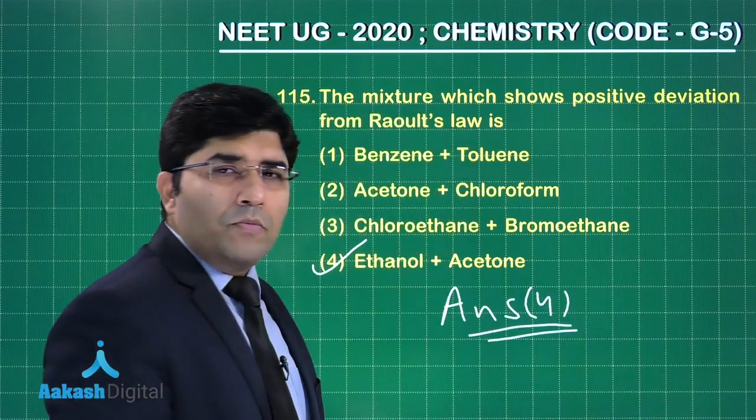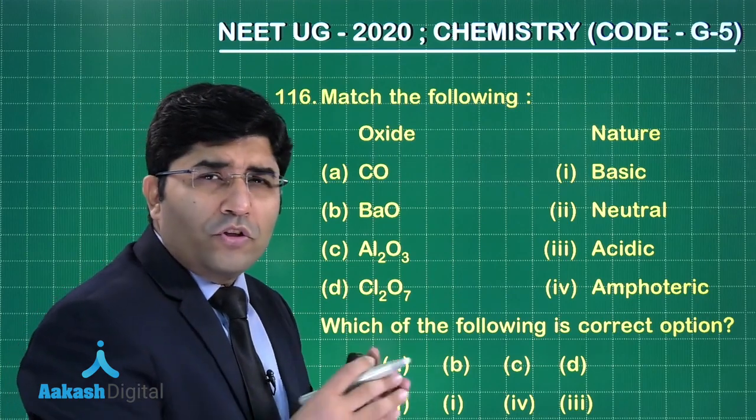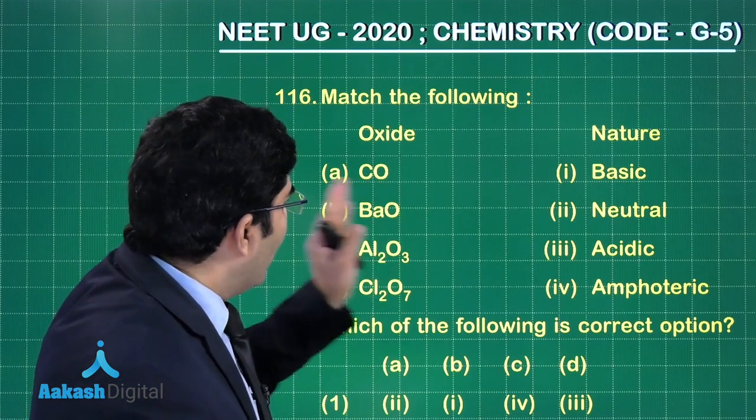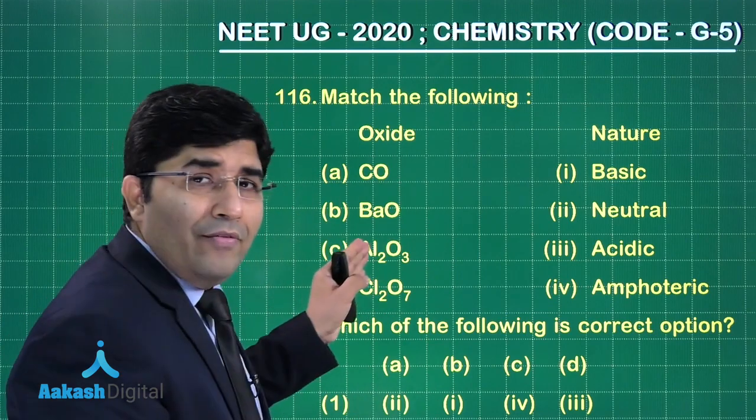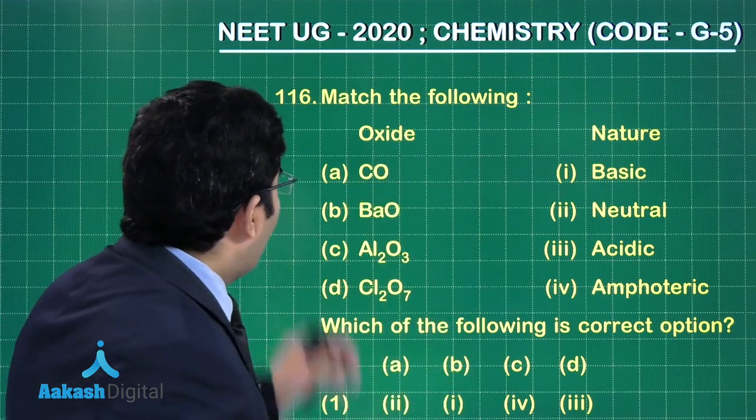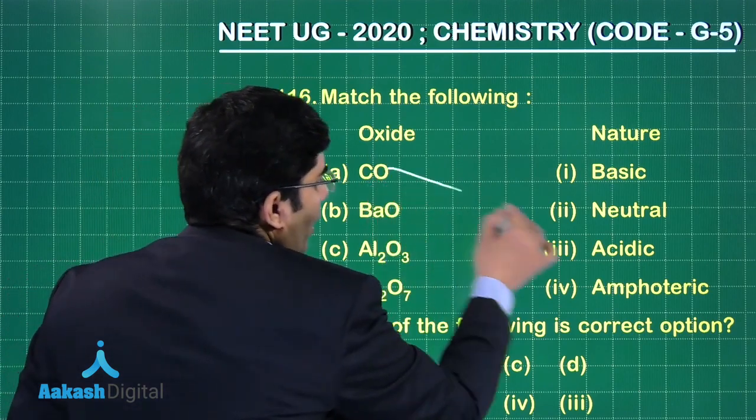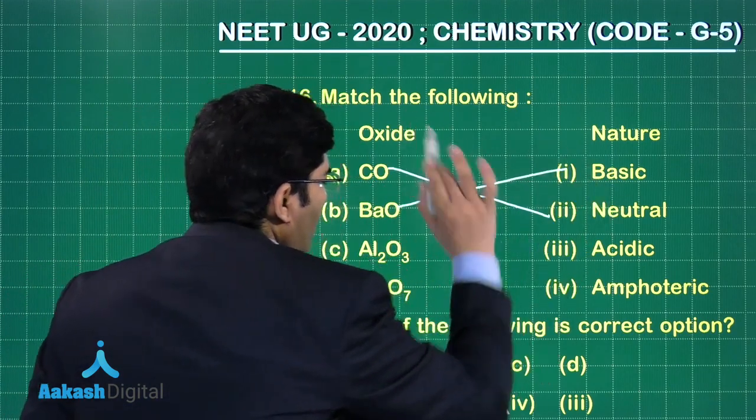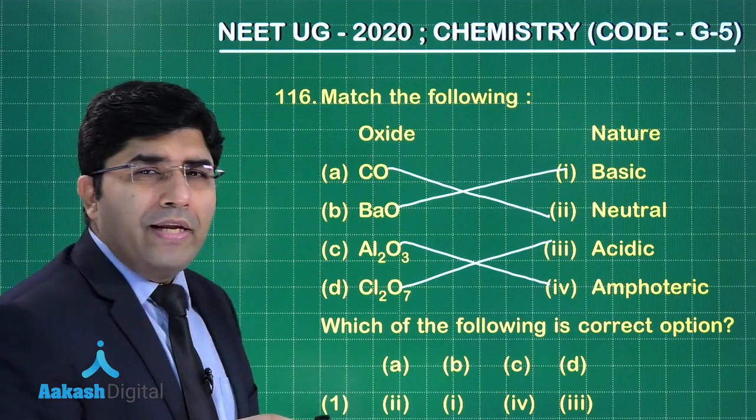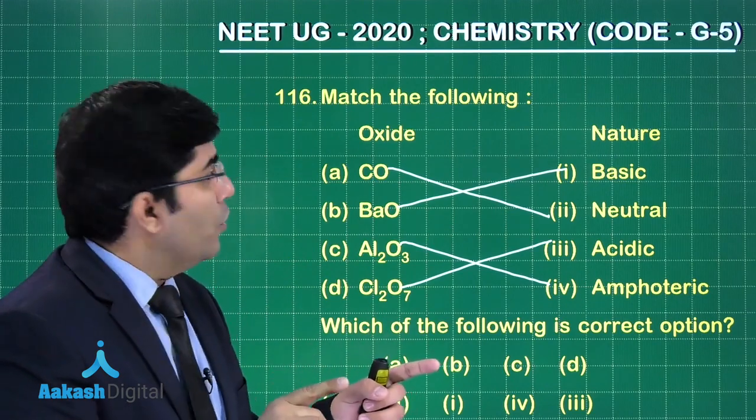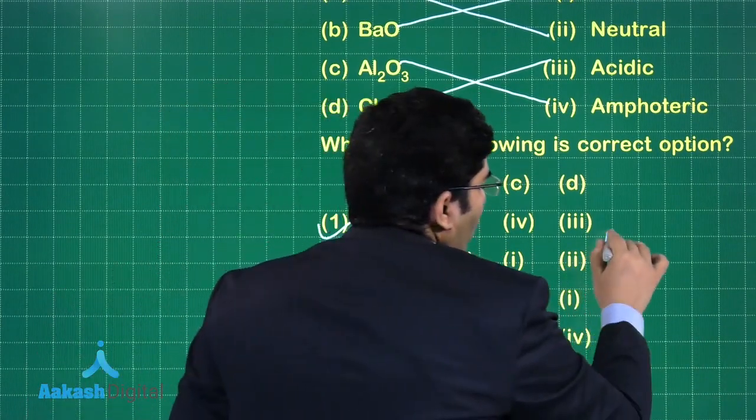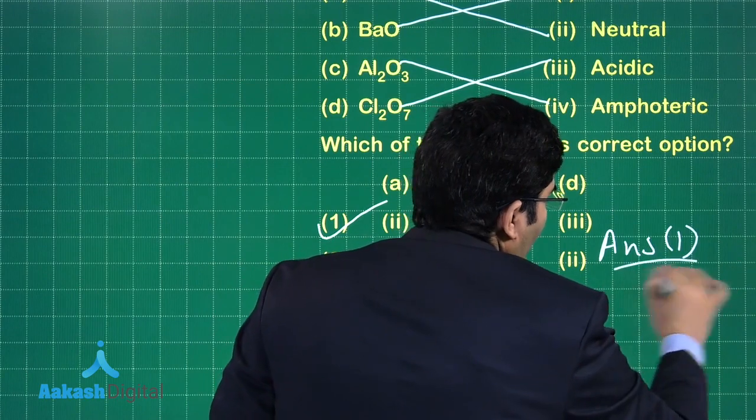Let's move on to the next question. So now this is a question based on the nature of oxides. We have to match two columns. In first column oxides are given, another column the nature of oxide is given. So we all know that carbon monoxide is neutral, barium oxide is basic, aluminium oxide is amphoteric, and Cl₂O₇ is acidic in nature. So the correct answer will be option number one.